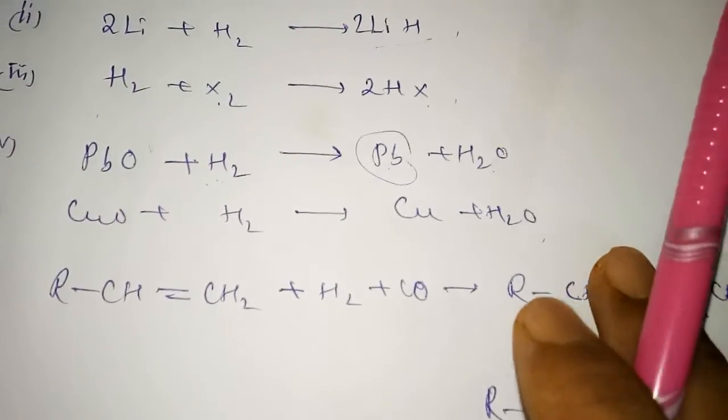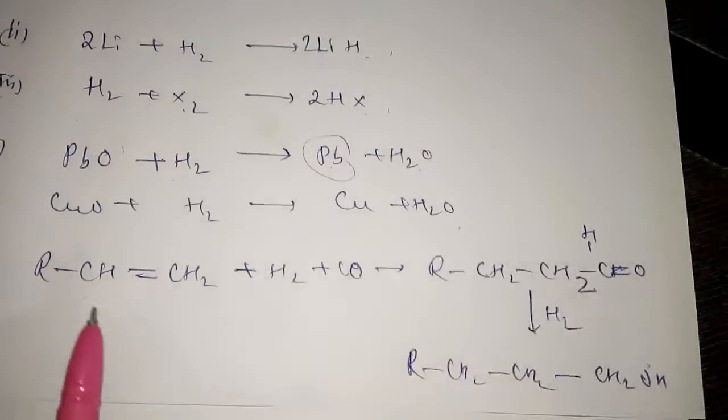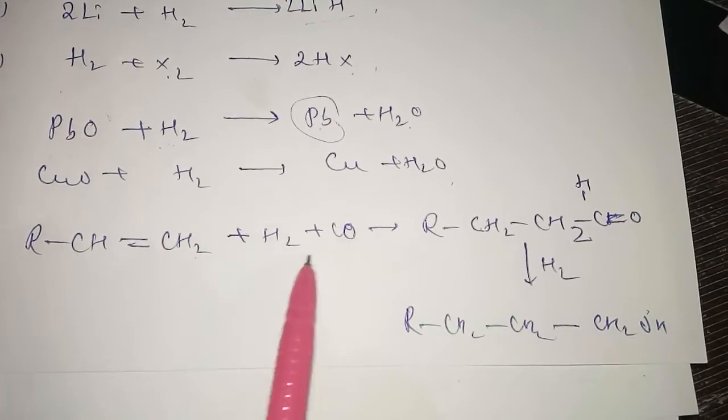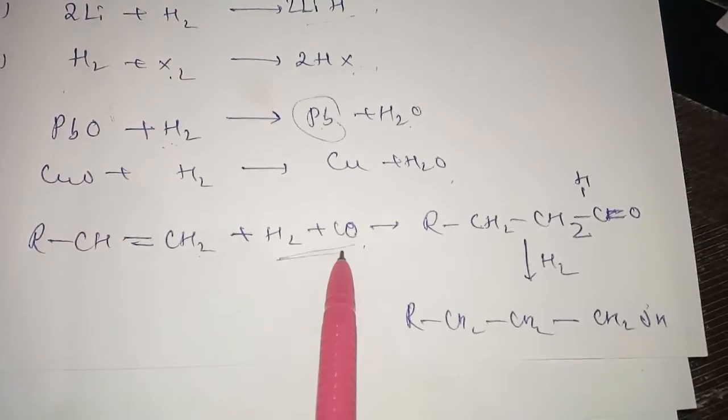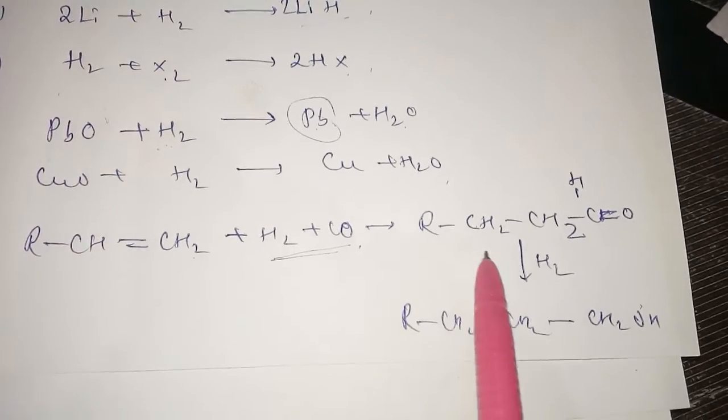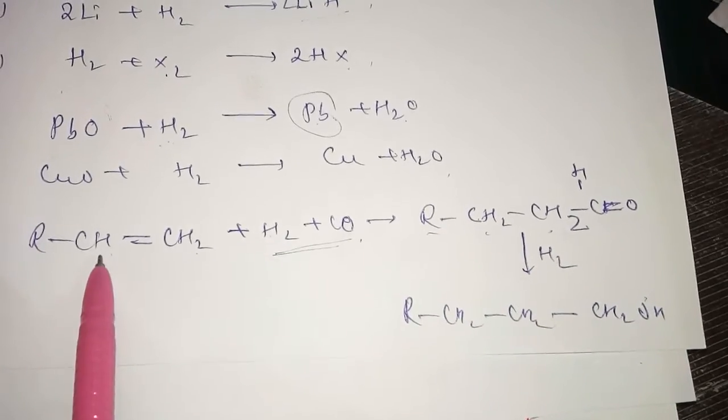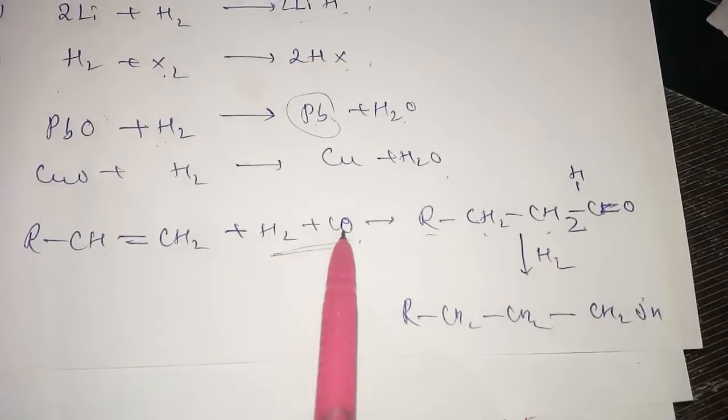If you take olefins RCH double bond CH2, hydrogen and CO reacting with water gas, they are forming RCH2CH2. One hydrogen comes here and one hydrogen, then CHO is left, forming aldehyde.